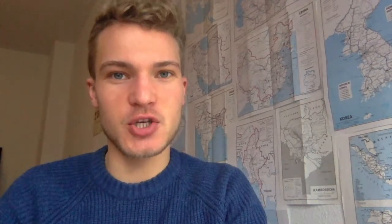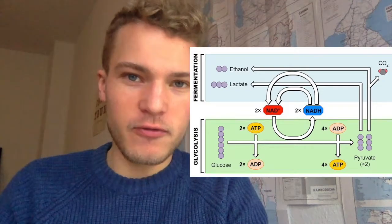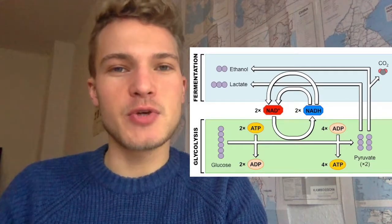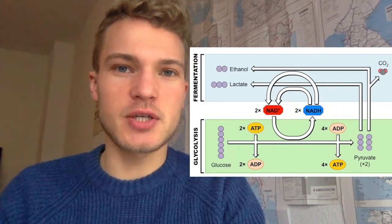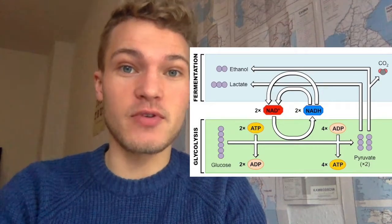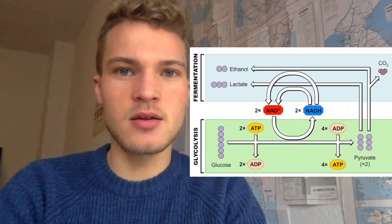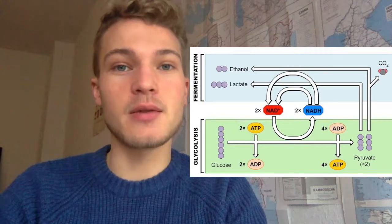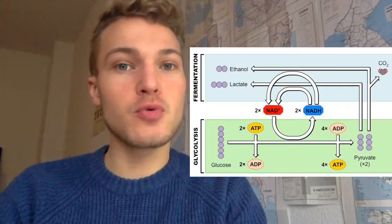In glycolysis, we reduce our electron carrier NAD+ into NADH. For glycolysis to take place again and again, we need more oxidized NAD+, which we can then reduce again into NADH. So we need to repurpose the end product of glycolysis — two molecules of pyruvate — using them as an oxidizing agent. We reduce them and oxidize the NADH, which gives us NAD+ again so we can repeat glycolysis. This leaves us with another end product: pyruvate is converted into either ethanol in plants or lactic acid in animals and humans.